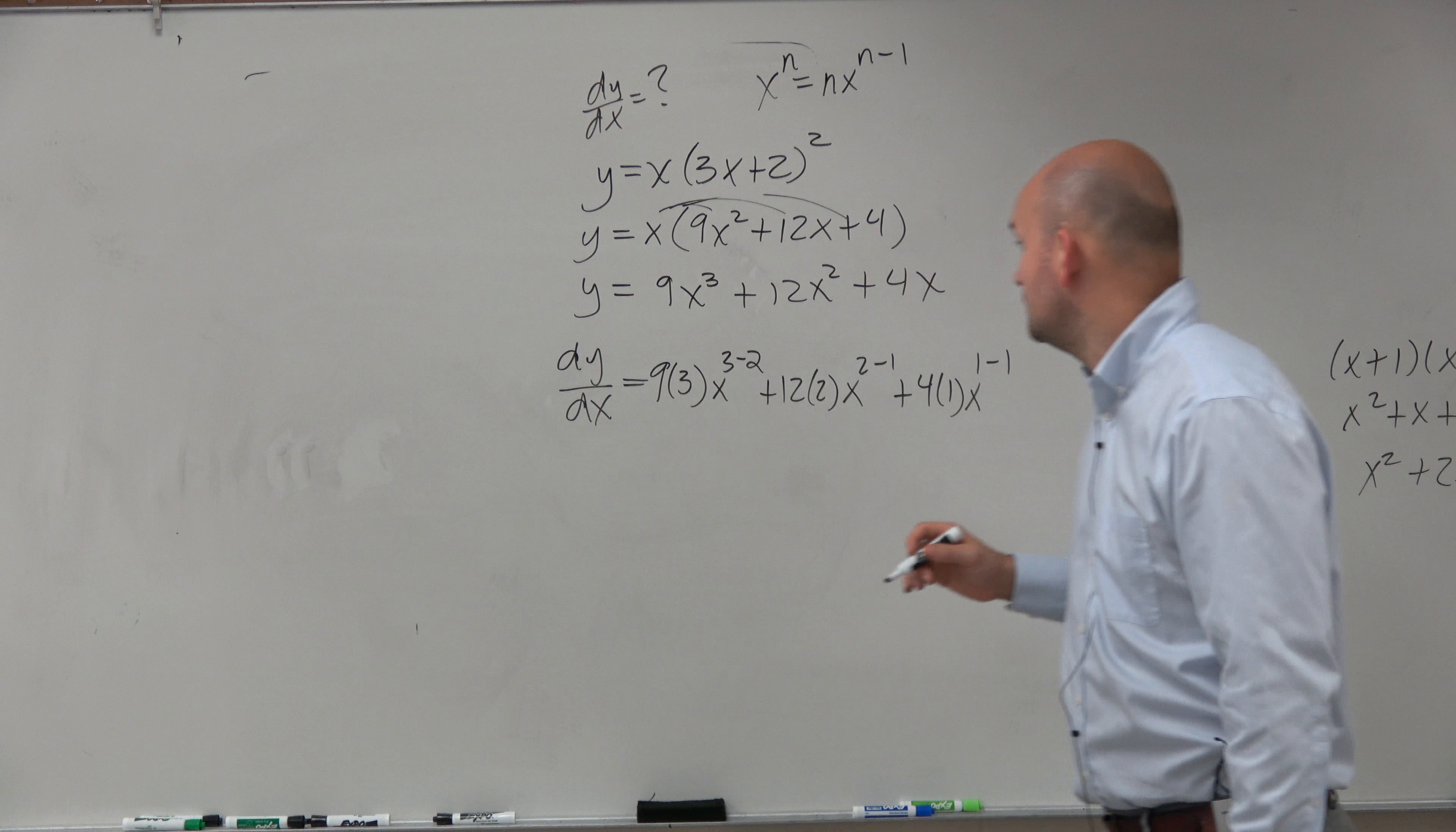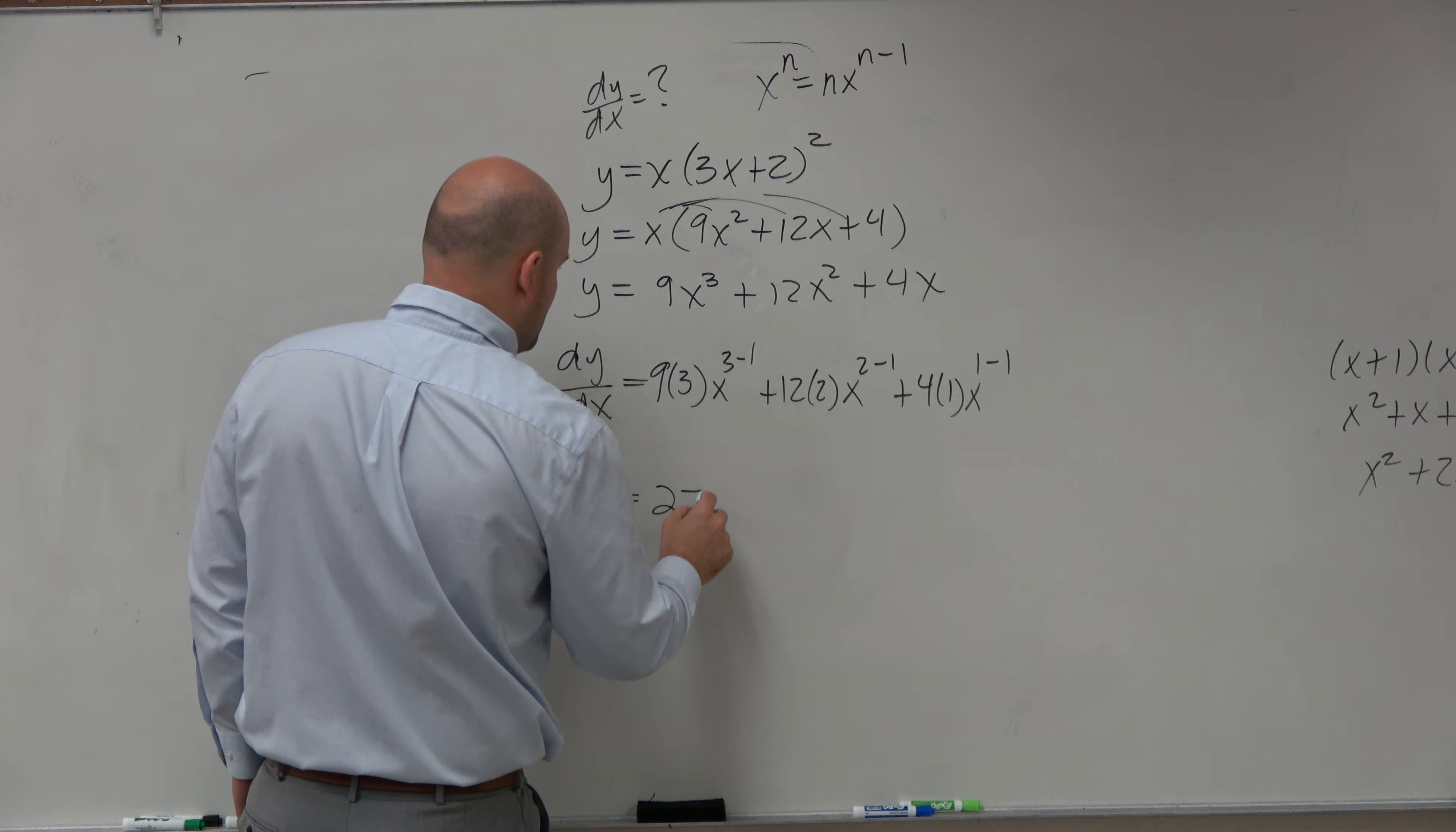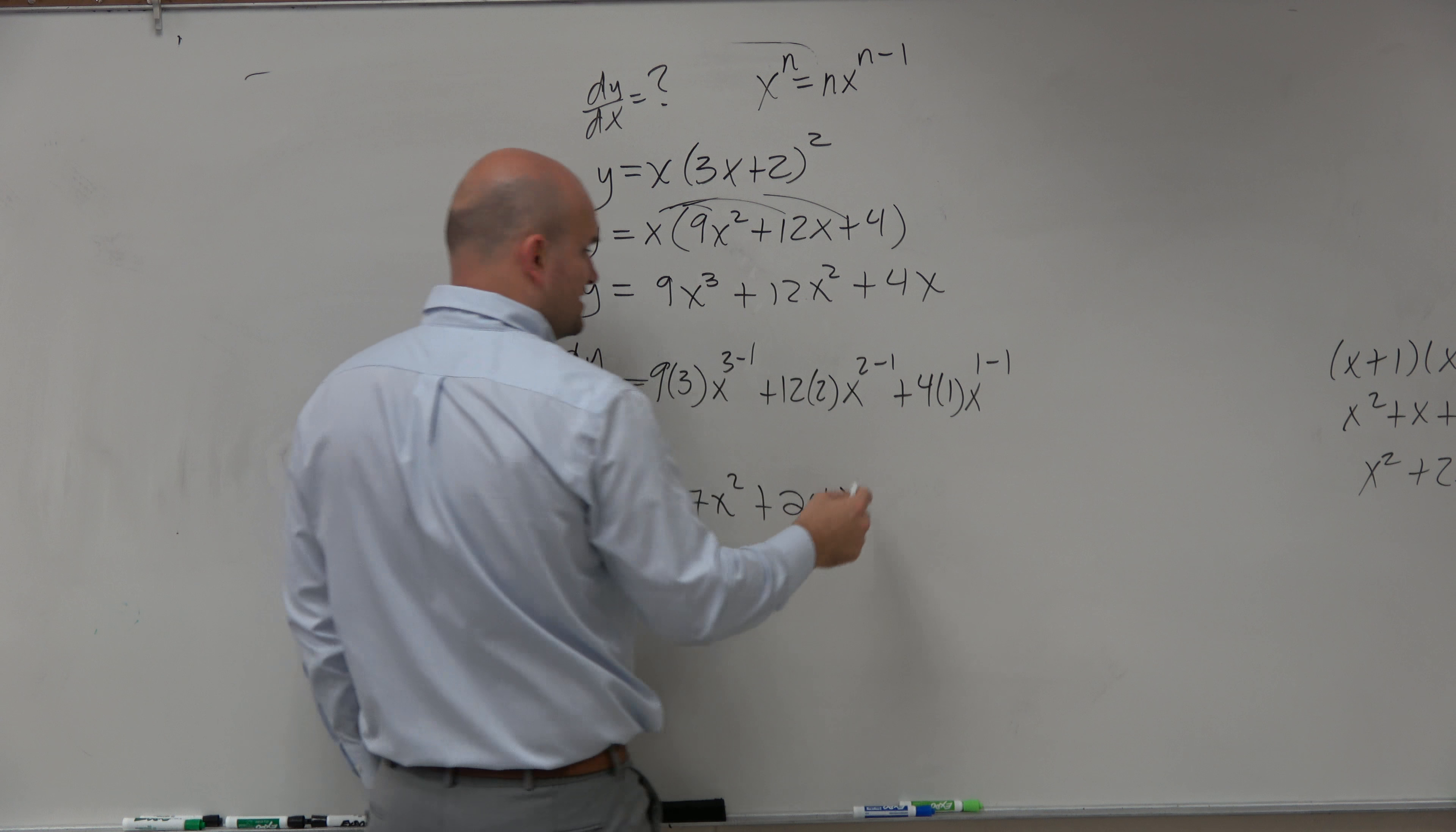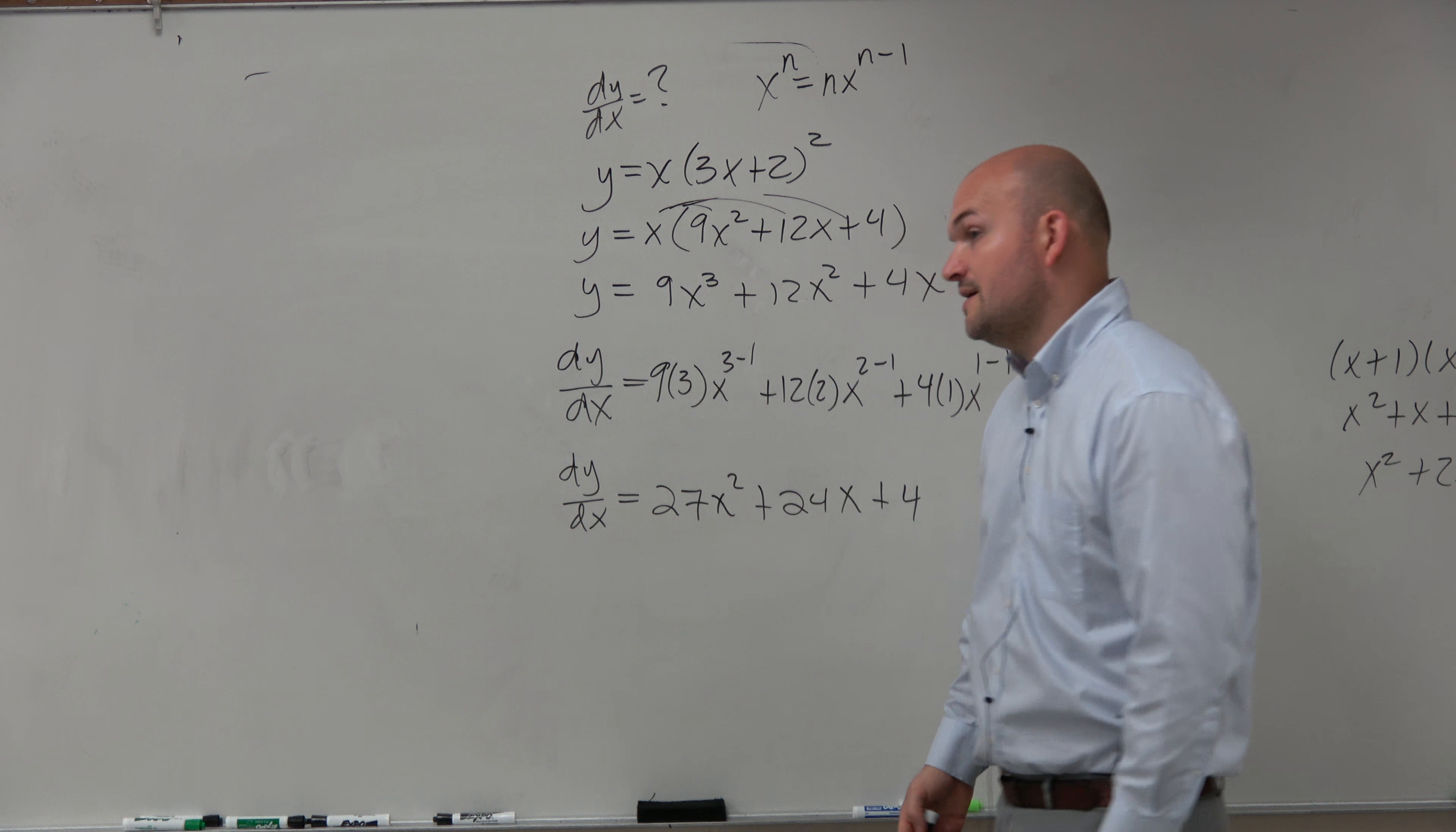It isn't 2, it's supposed to be 1. So we're going to write dy/dx = 9 times 3 is going to be 27x². 12 times 2 is 24x to the first, which is x, plus 4 times 1, which is 4. x to the 1 minus 1 is 0, x to the 0 is just 1, so we just leave it off like that.